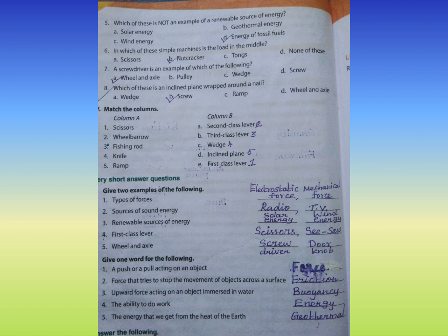Roman numeral one, give two examples of the following. Number one: Types of forces. Electrostatic force, mechanical force. Number two: Sources of sound energy. Answer: Radio, television.